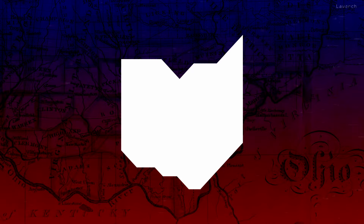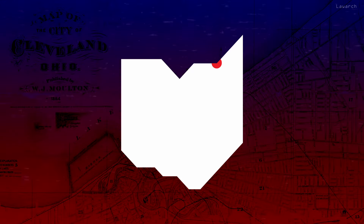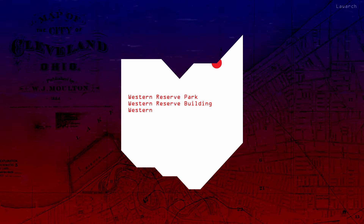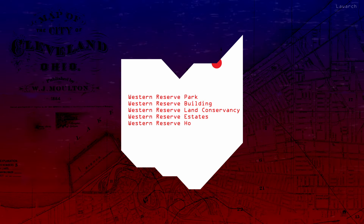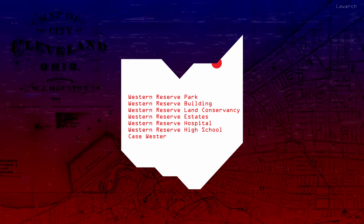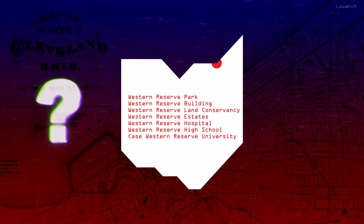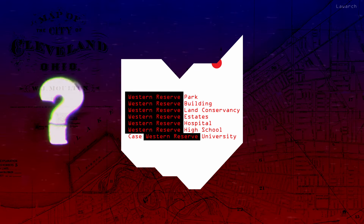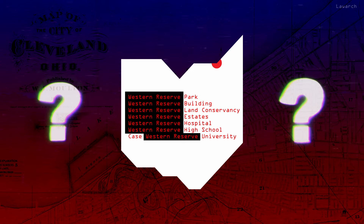When looking at a map of Northern Ohio around the city of Cleveland, references to the Western Reserve begin to appear in the names of several parks, buildings, and institutions, most notably Case Western Reserve University. But why is that? What is the Western Reserve exactly, and why does that name appear around Northern Ohio specifically?